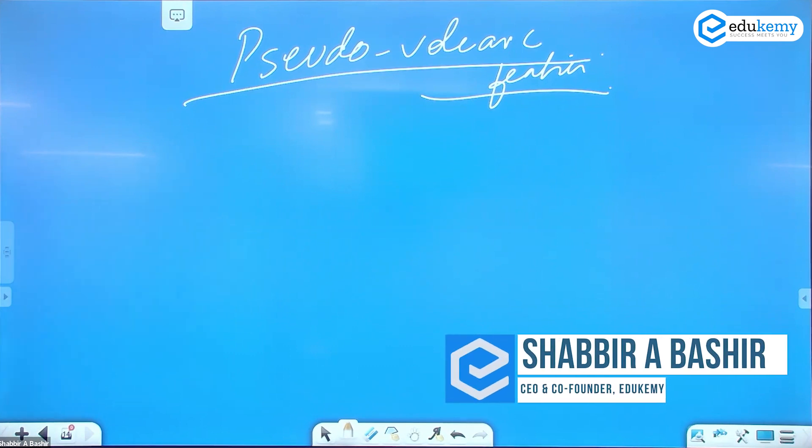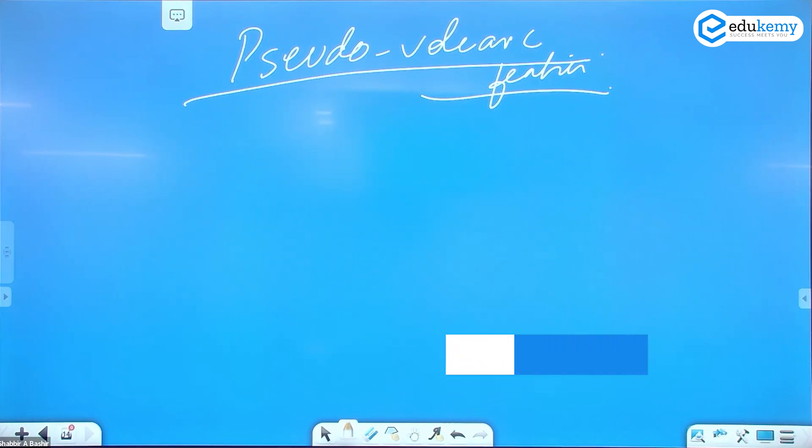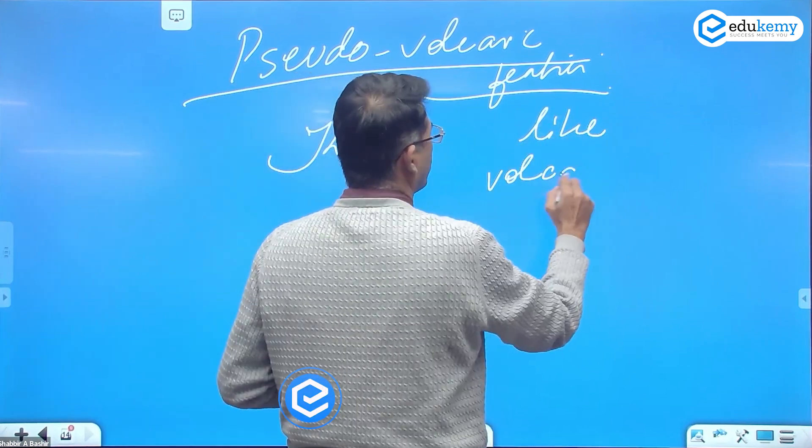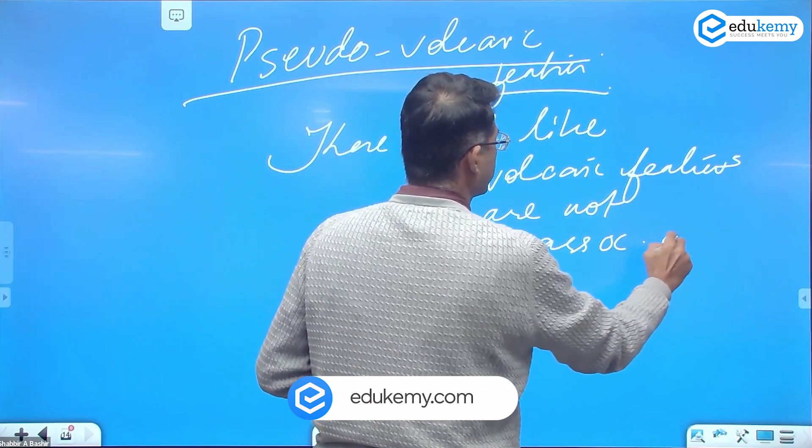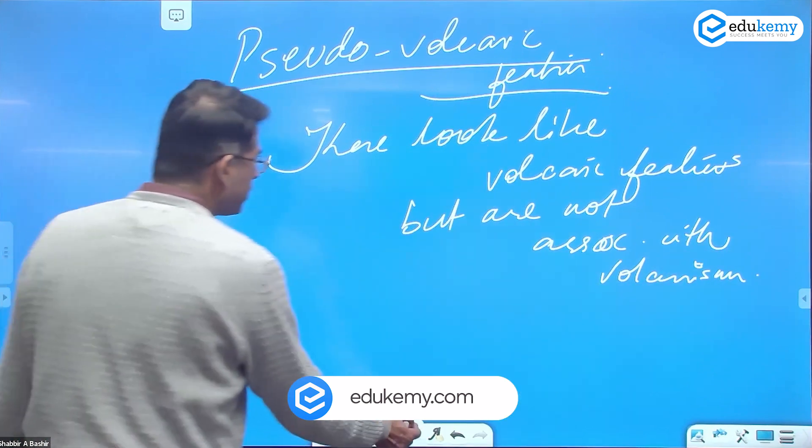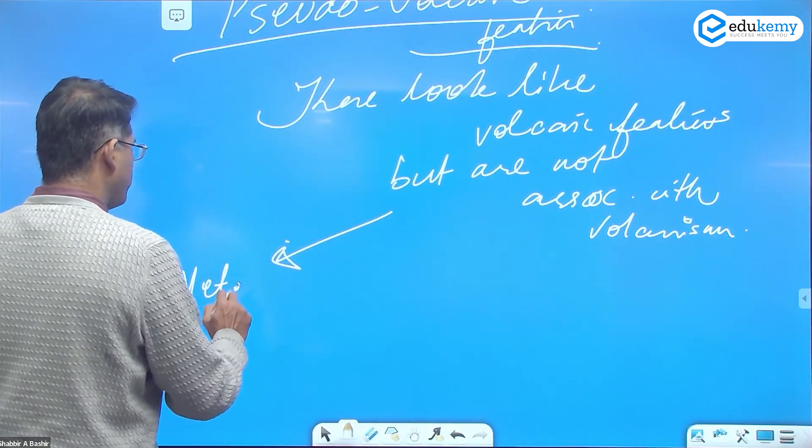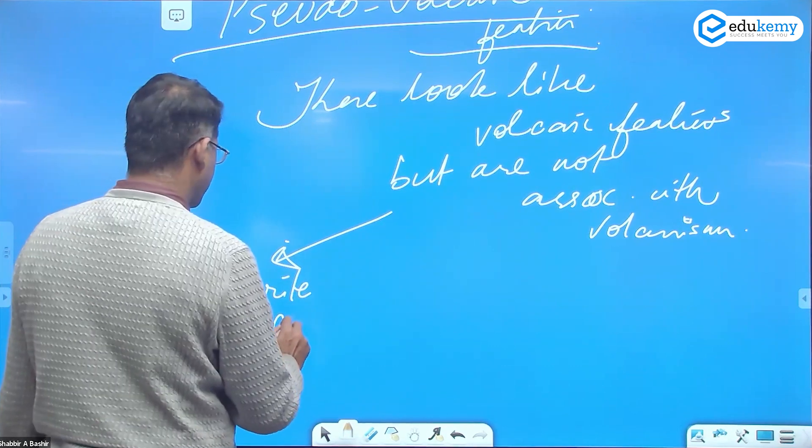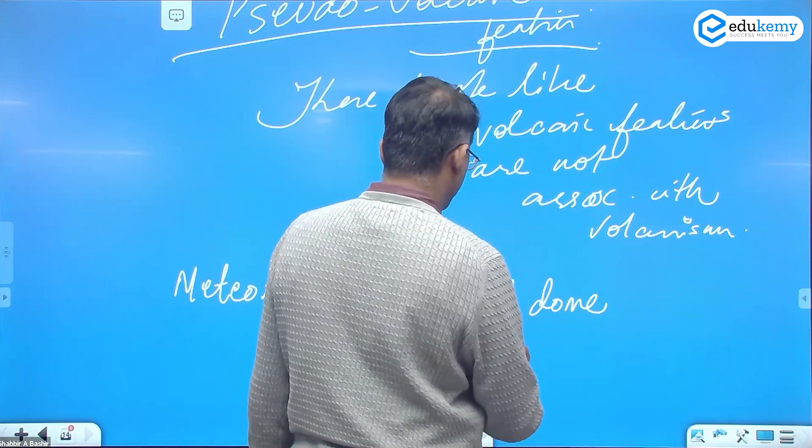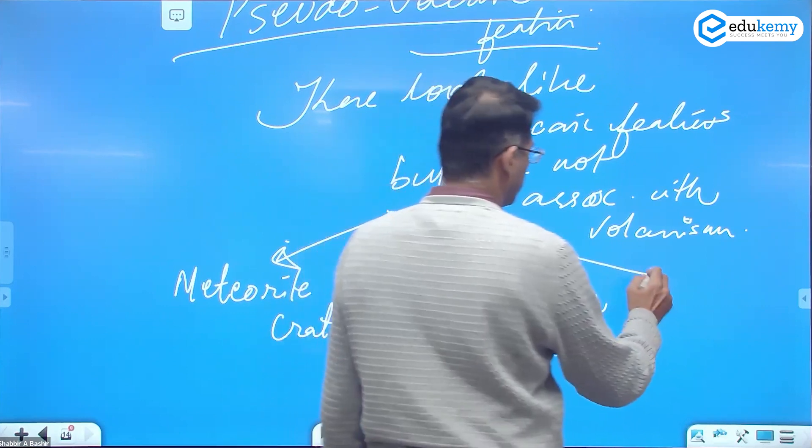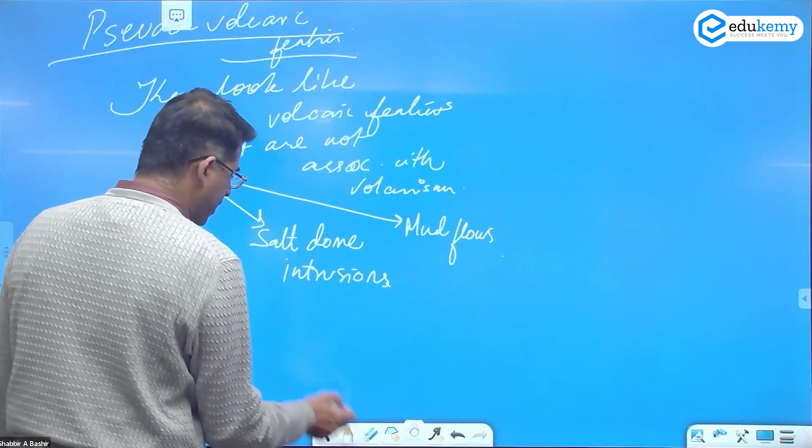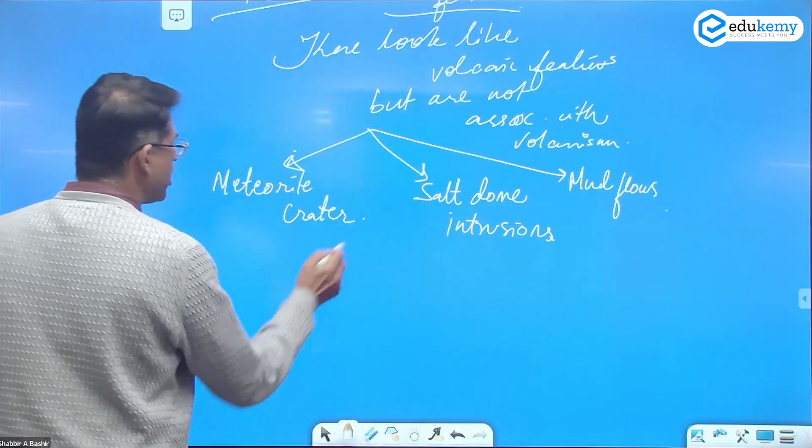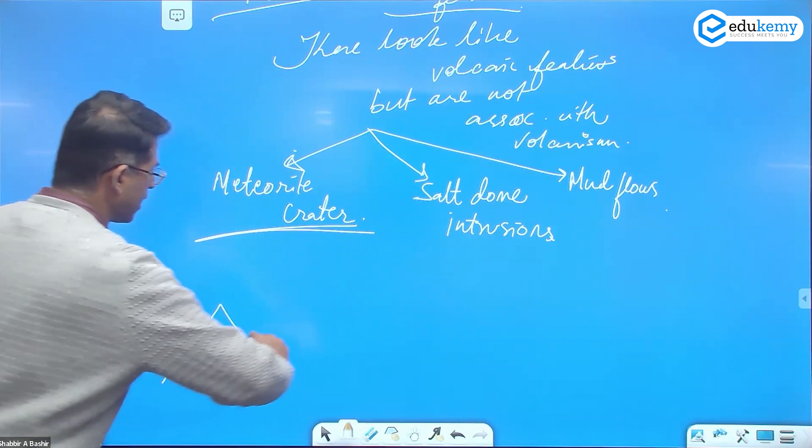So these features look like volcanic features but they are not. These look like volcanic features but are not associated with volcanism. One is the meteorite craters, second are salt dome intrusions, third is mud flows.